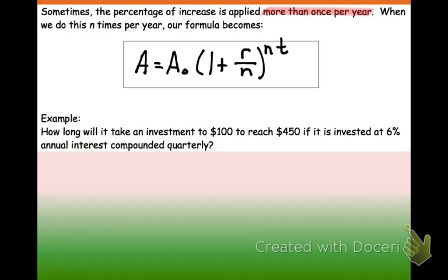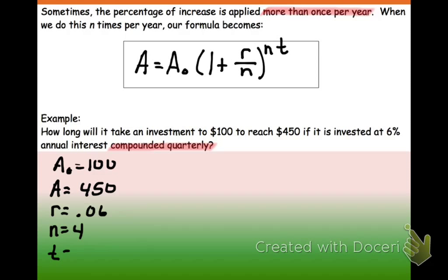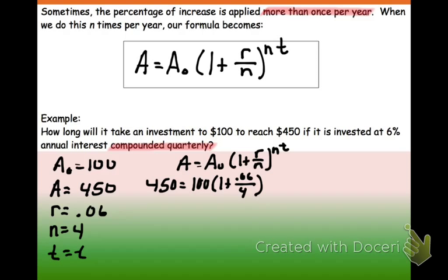So looking at our example, how long will it take an investment of $100, so our initial amount is $100, to reach $450, so we want to get it up to $450, at a rate of 6%, so 0.06. And it says it's being compounded quarterly, so that's four times a year. And again, we don't know what our t is. We don't know how long it's going to be. So, plugging that in.